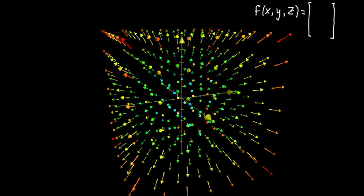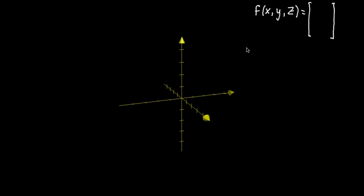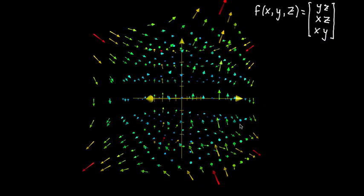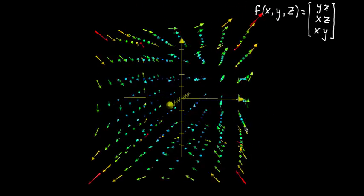So I'll go ahead and get rid of this vector field. And in this example, the x component of the output will be y times z. The y component of the output will be x times z. And the z component of the output will be x times y. So I'll just show this vector field, and then we can start to get a feel for how the function that I just wrote relates to the vectors that you're seeing.